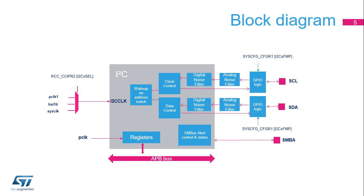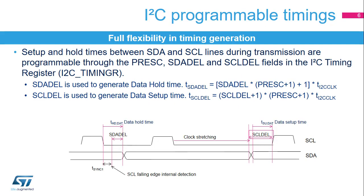Analog and digital noise filters are present on the SCL and SDA lines. A 20 mA driving capability is enabled using the control bits in the system configuration registers. An SMBus alert pin is available in SMBus mode. The I2C setup and hold times can be configured by software through the I2C timing register. The SDA-DEL and SCL-DEL counters are used during transmission to guarantee the minimum data hold and data setup times.